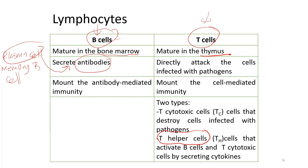This is different from T cells. T cells do not secrete antibodies. Instead, they will attack the cells infected with the pathogen. This action is similar to NK cells that we learned about in the innate immune response. However, the difference is that T cells need to recognize, identify, and undergo activation before they are able to attack infected cells.